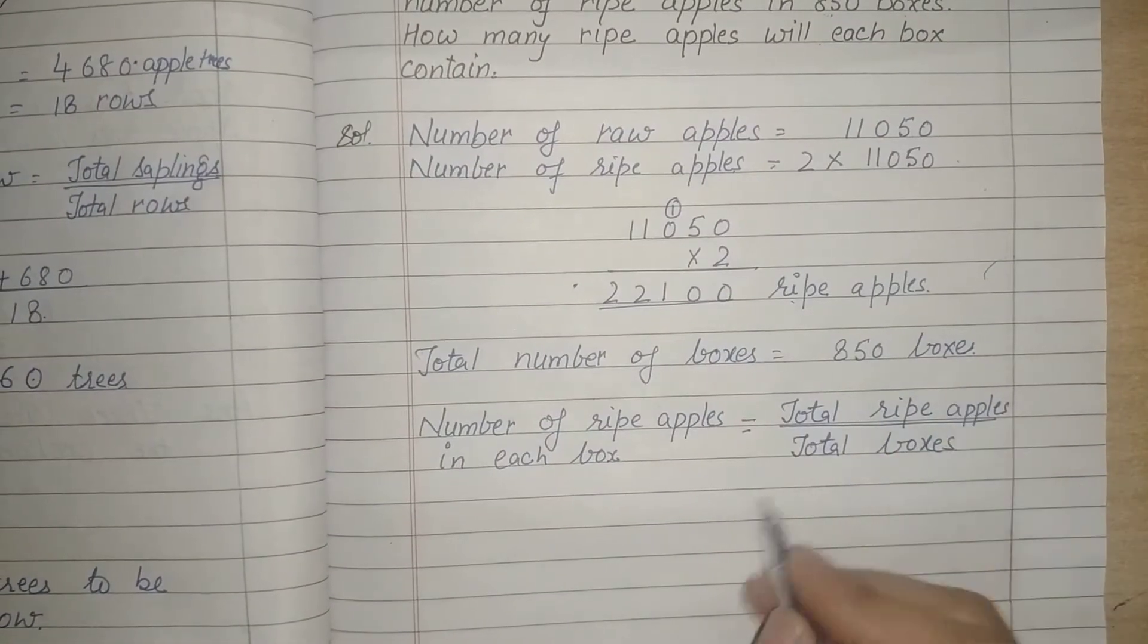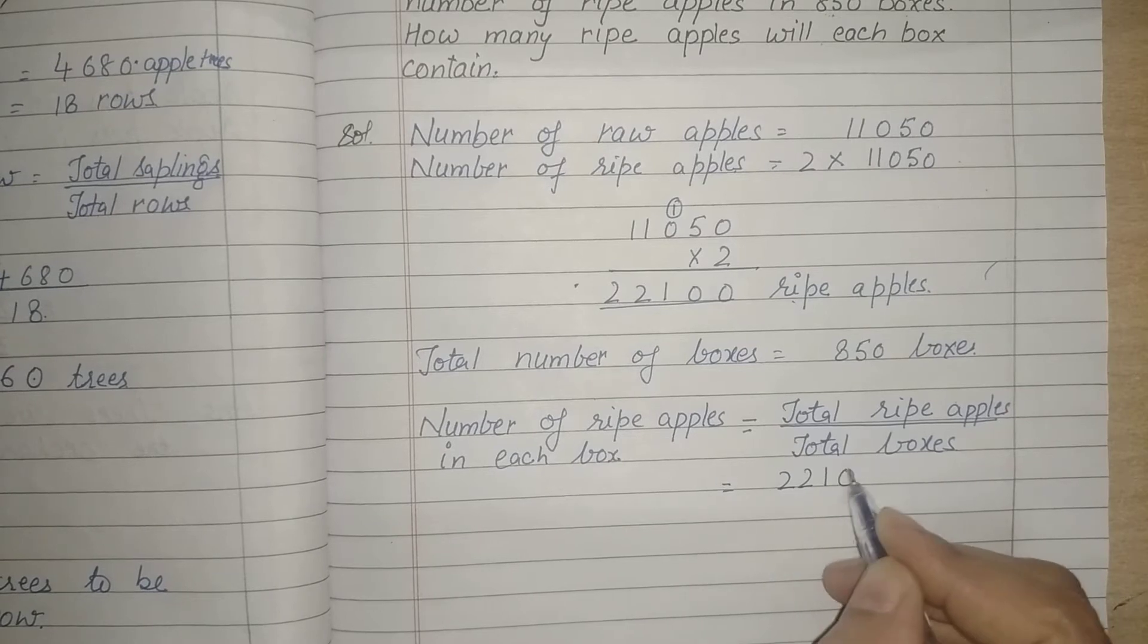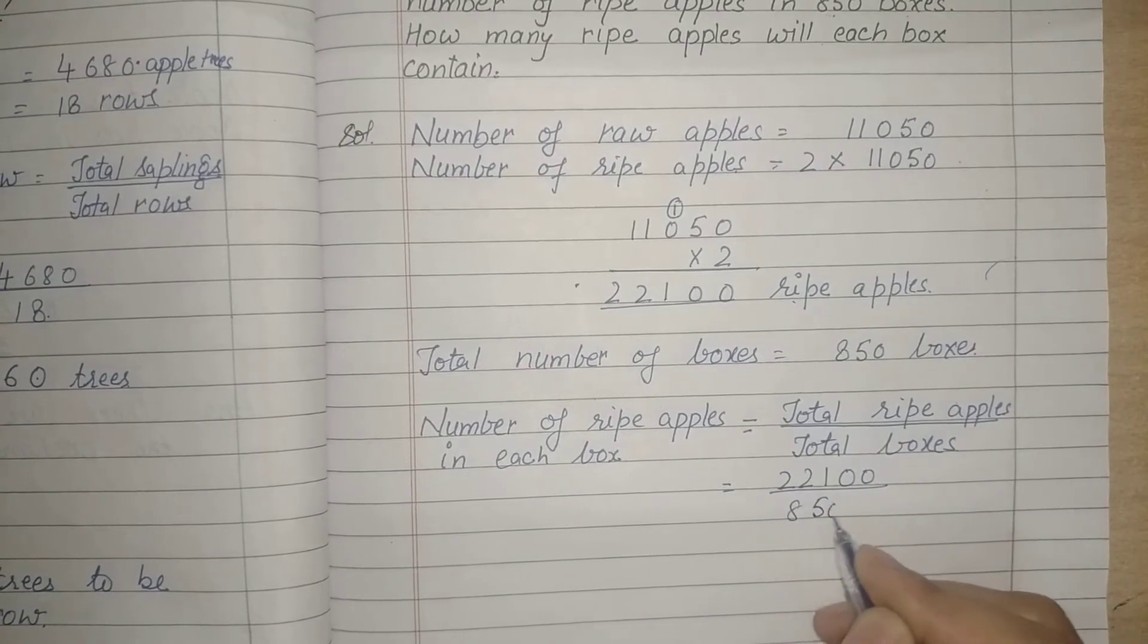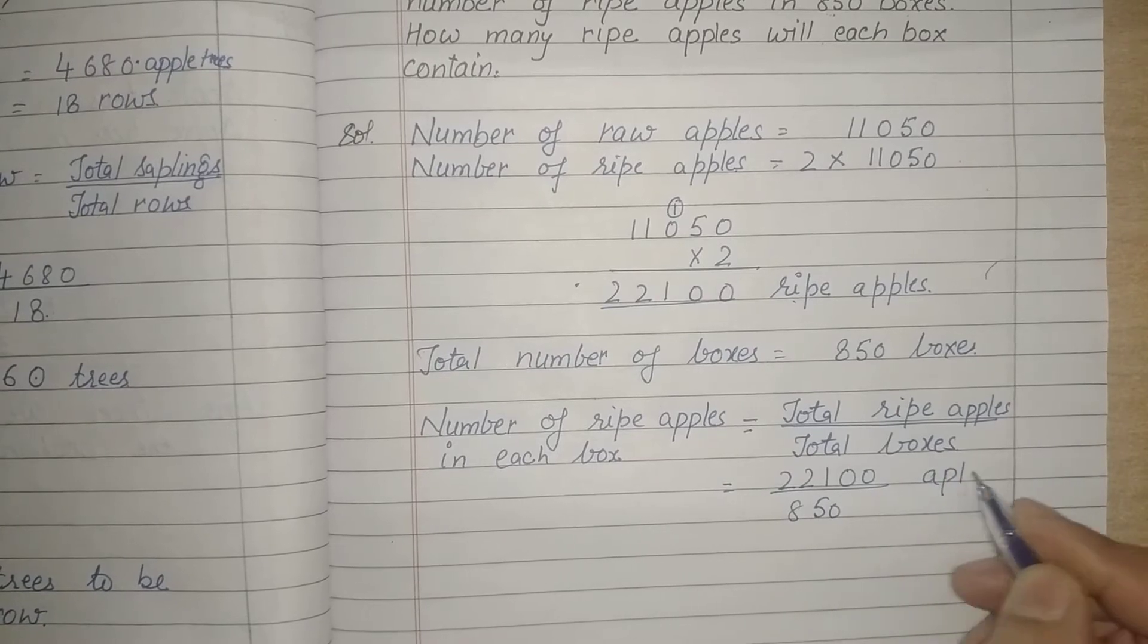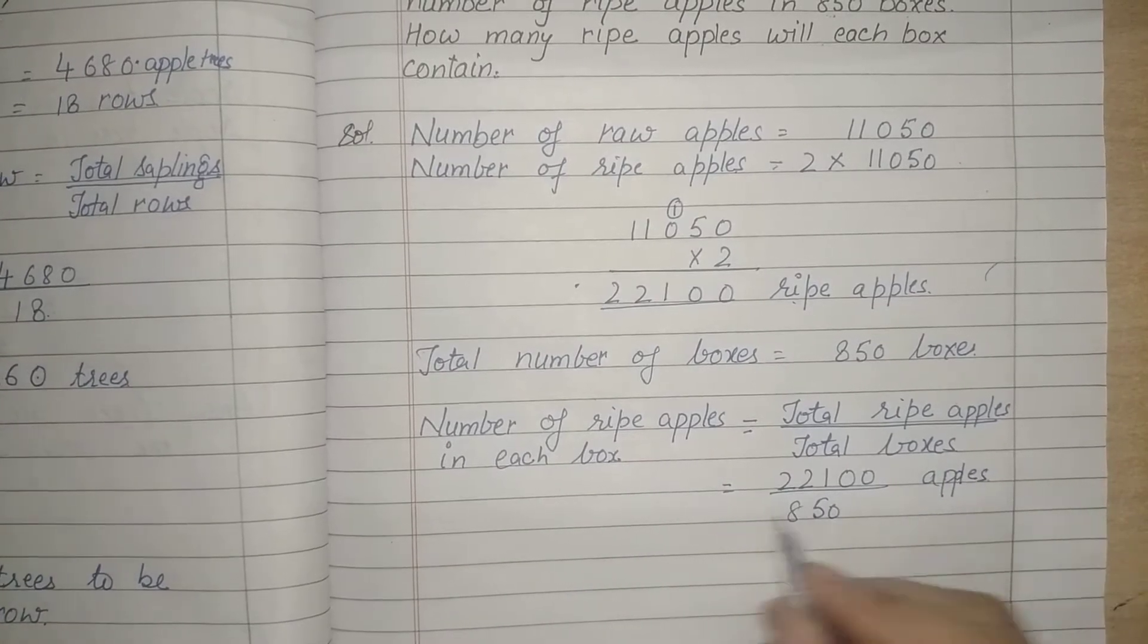We have 850 boxes and 22,100 ripe apples. So this is the number of ripe apples in each box we will keep in each box.